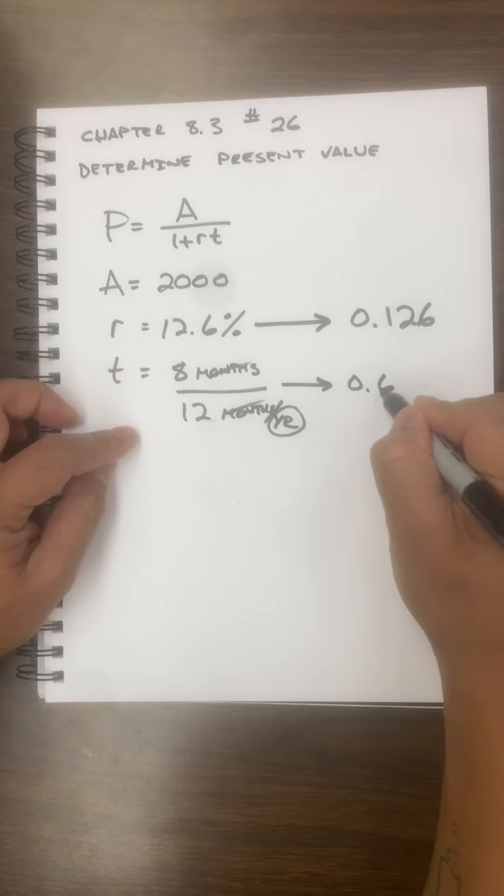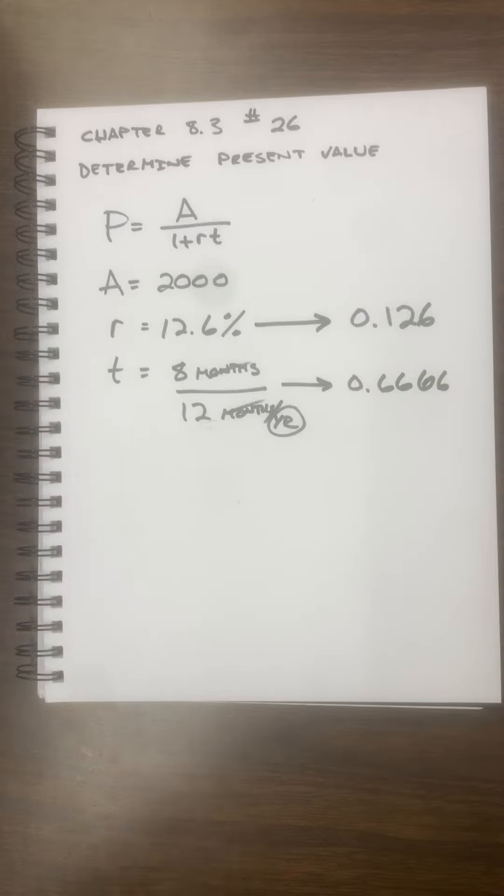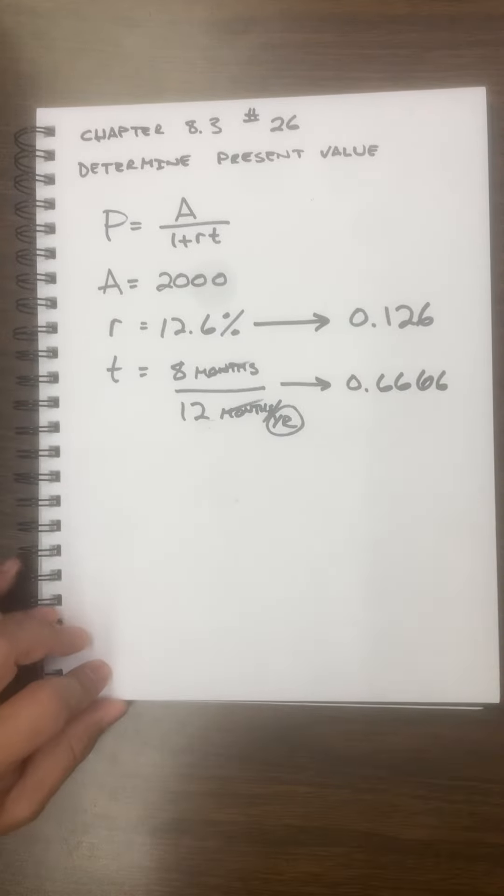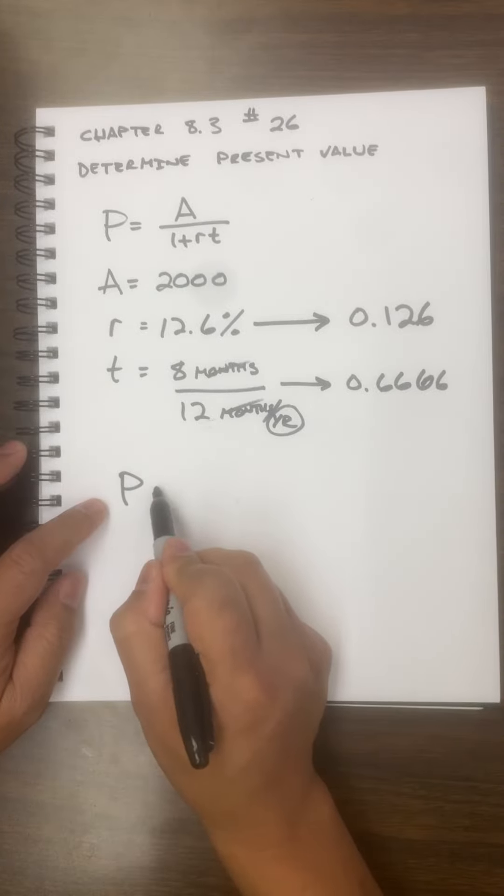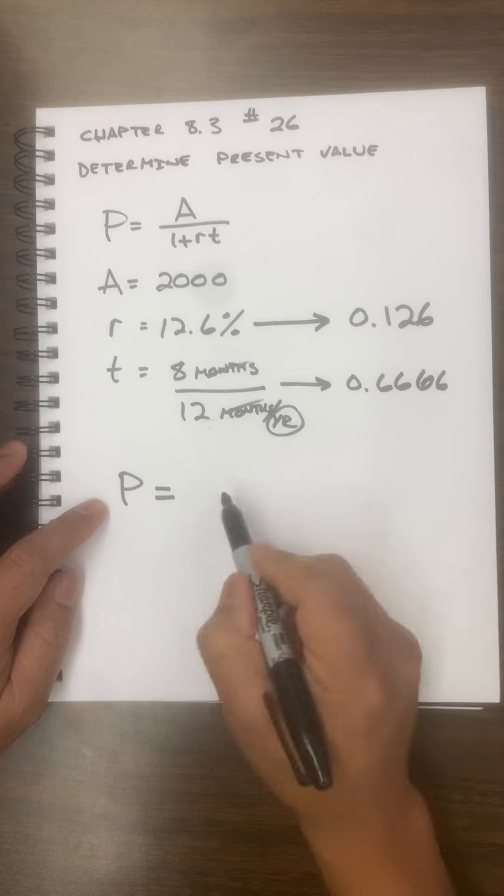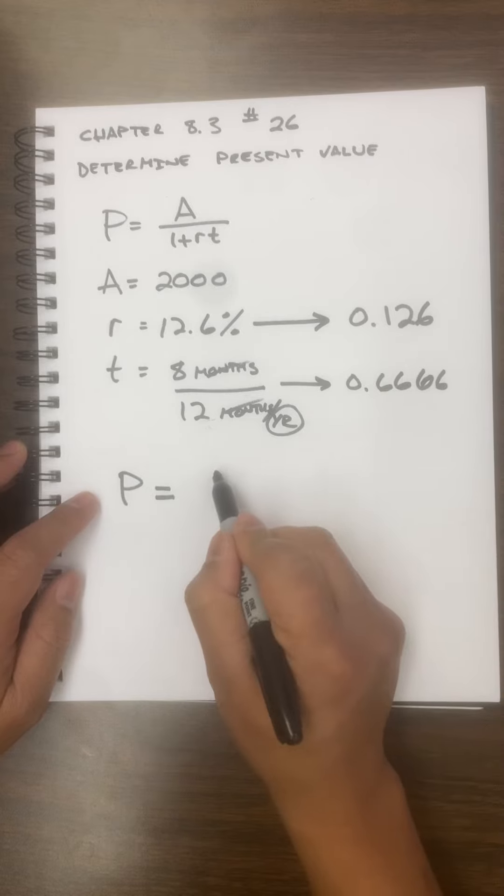All I'm going to do is pop everything into the formula. The thing that I want is the present value or the principal: A equals 2000 divided by